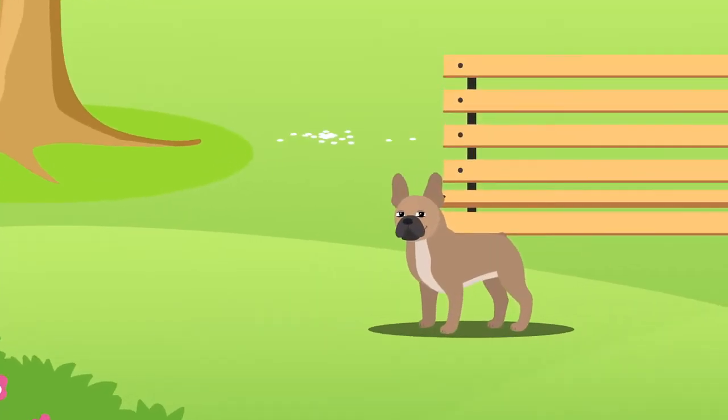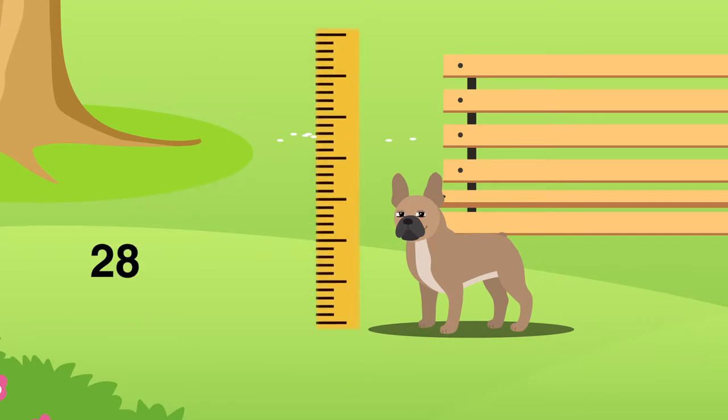The French Bulldog is one of the smallest breeds of dog in the world, which typically grows between 28 and 30 centimetres in height and can weigh between 11 and 13 kilograms.